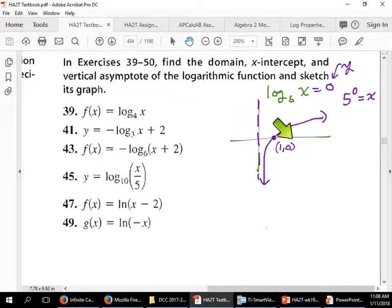Now the domain of this guy, because this function did not shift to the left or to the right, I know my asymptote is at x equals zero. This asymptote is at x equals zero. That means we have nothing over here on this side for this function, so my domain is simply zero to infinity.